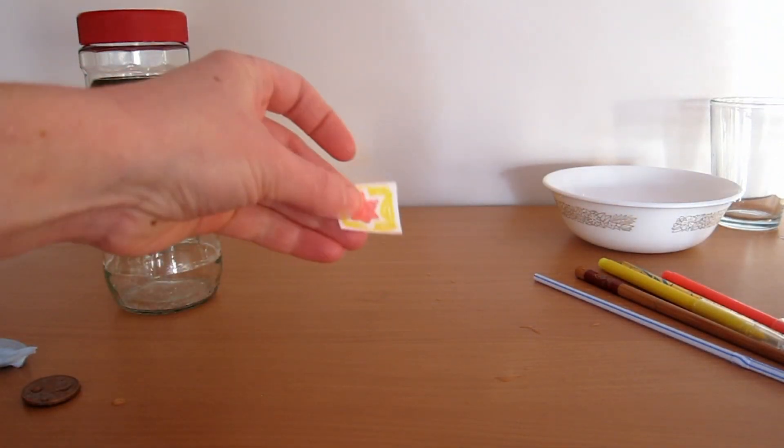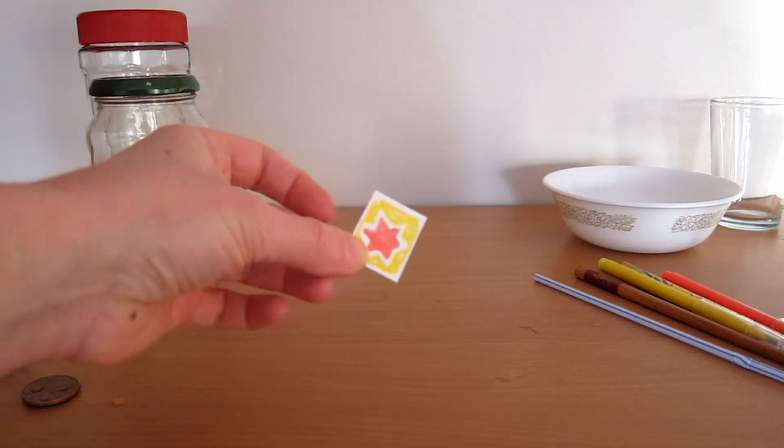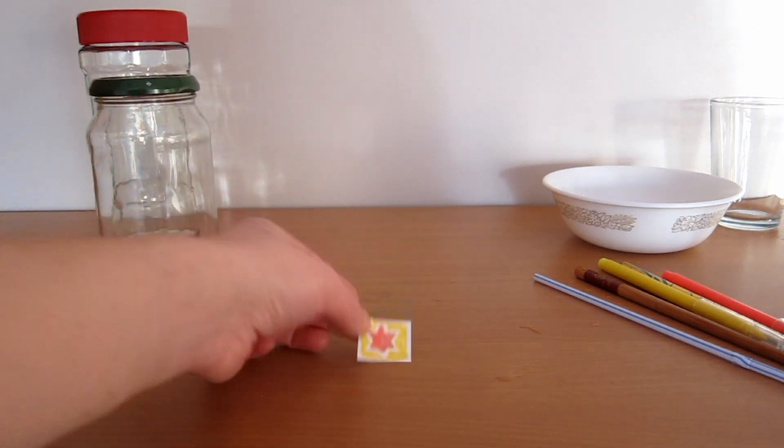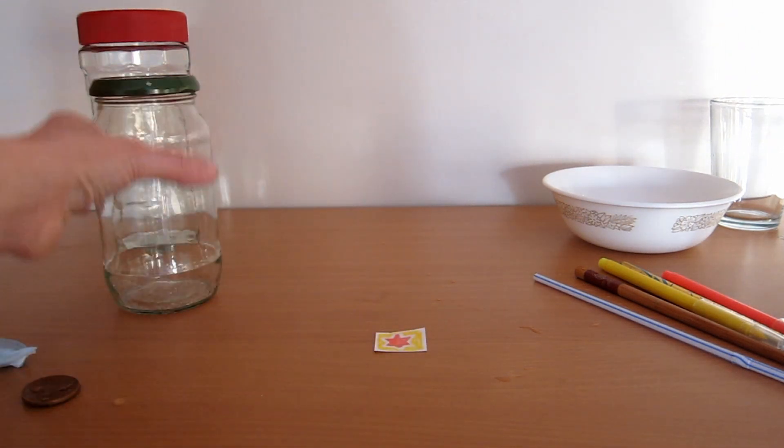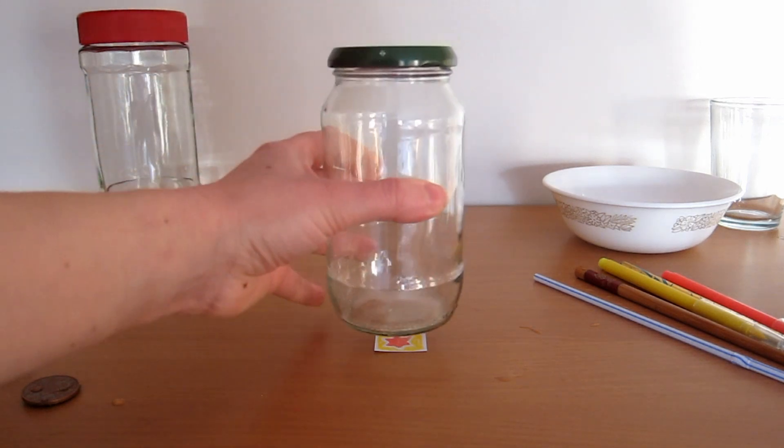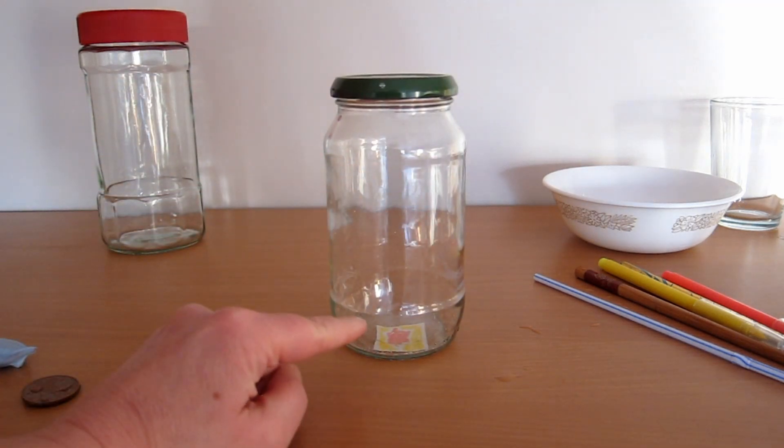Next, take a stamp or a bit of paper with a drawing on, and get an empty jar and put it over the top. Now you can see the stamp or the drawing underneath.